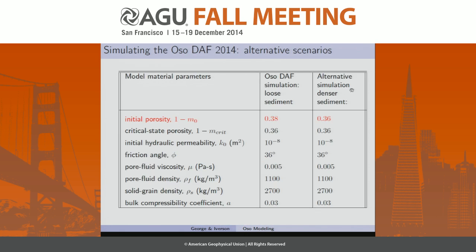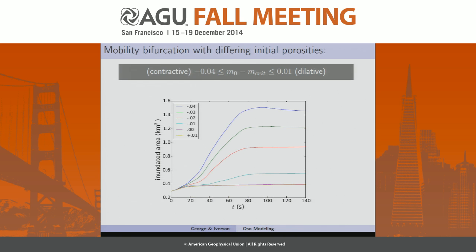So the model depends on these parameters, but it's not particularly sensitive to most of them — other than this initial porosity and critical porosity, and probably the next most sensitive parameter is the hydraulic permeability. This plot shows the inundated area, where each curve is a different simulation. The two lowest curves are material that's dilative or non-contractive, and they essentially lie on top of each other. The material slumps, inundates an expanding area, but then pretty much stops and is stable after 20 to 30 seconds.